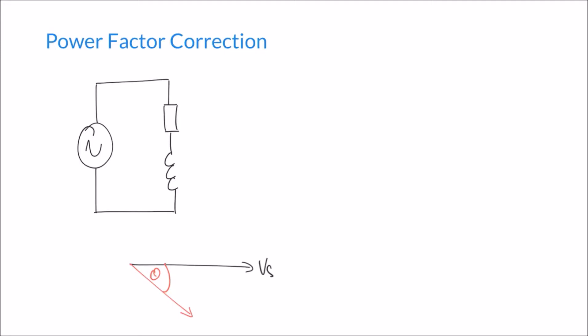If we do that on the diagram, we can turn this circuit into a true parallel circuit by adding a capacitor in parallel to both the resistor and the inductor. As covered in our videos on phasor diagrams, this capacitor is going to draw its own separate current. There's going to be a current flowing through that capacitor branch, and that is going to be a leading current — it's going to lead by 90 degrees. I'll mark this additional current as IC and the original branch current as IRL.